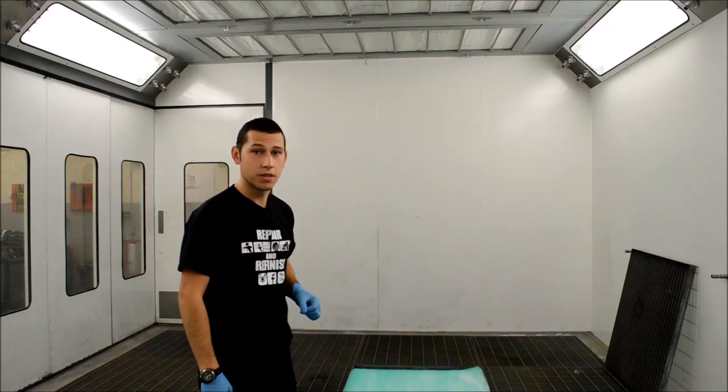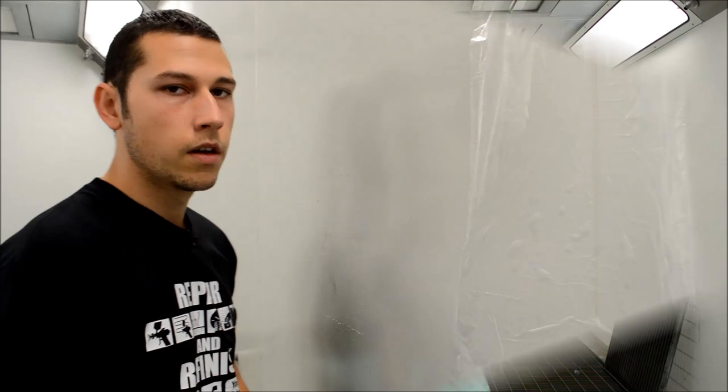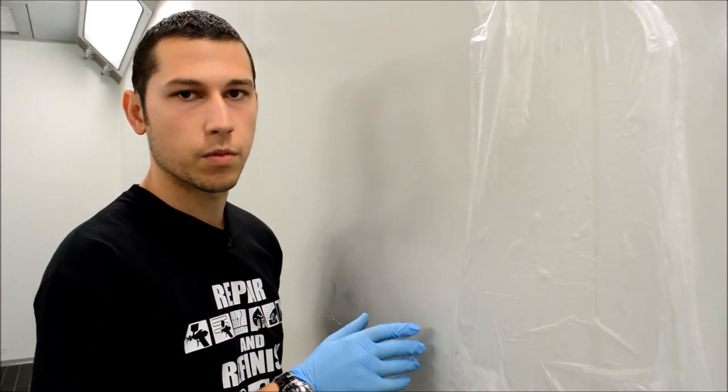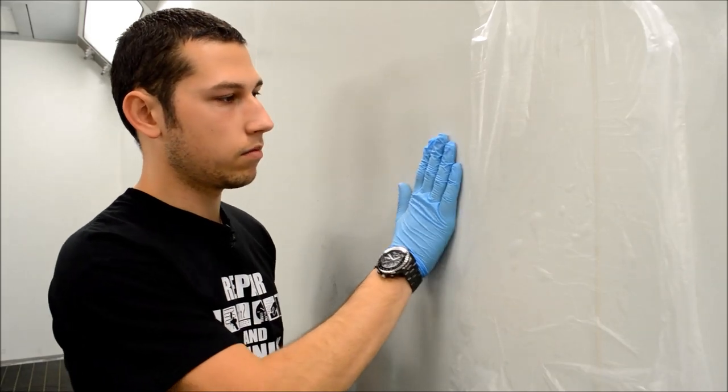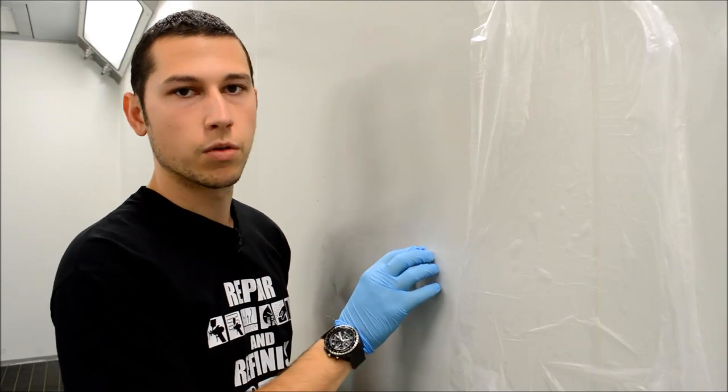So while we're in here, now's probably a good time just to have a look at the booth walls. So here are our booth walls and we actually spray these with a tack coat. As you can see, it's very tacky. We spray this on the walls because it helps eliminate any dust or dirt or flies, and it's basically aiming at keeping our jobs clean.